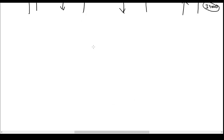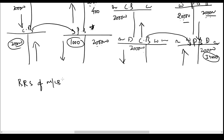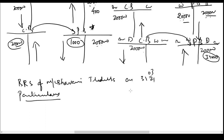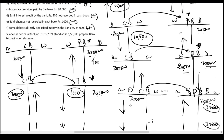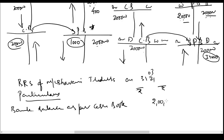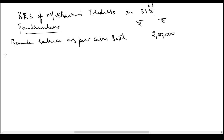Now let us prepare the Bank Reconciliation Statement of Messrs Bhavani Traders as on 31st March 21. We start with the bank balance as per cash book — 2,00,000 rupees. Some items will be added and some will be less.